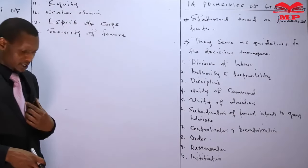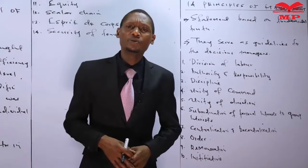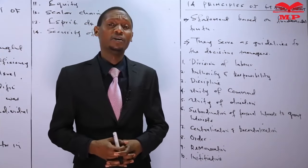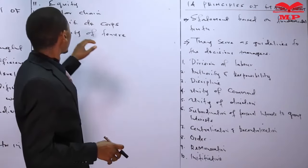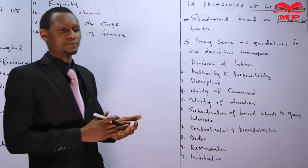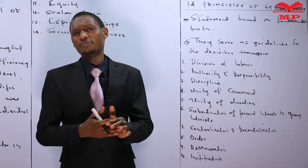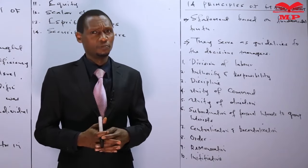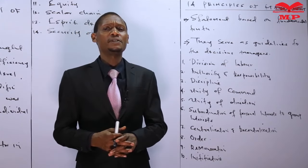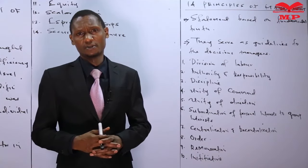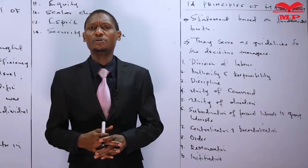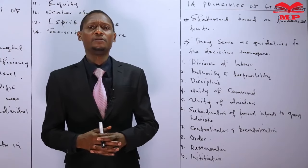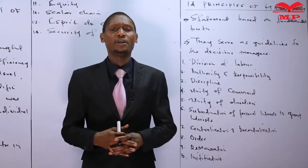Another principle is equity: according to Fayol, there should be equal and fair treatment to all employees with no discrimination whatsoever. He also observes the need for a scalar chain — the flow of authority and responsibility — with clear lines of authority from the top to the bottom of the organization. This helps people understand their relationships, so employees know who their boss is and bosses clearly understand who their subordinates are, which is useful for coordination and communication.